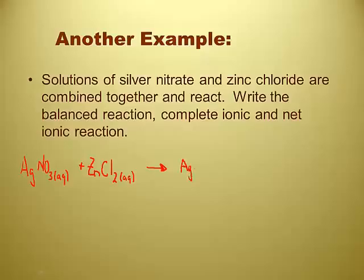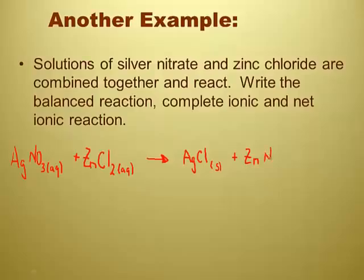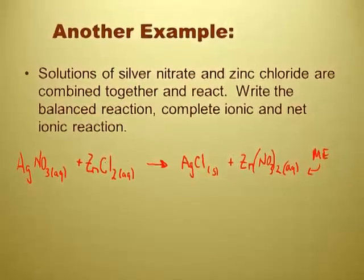This is going to form silver chloride — and that's going to be insoluble, because silver is an exception to the chloride solubility rule. That's the precipitate. We've also got zinc nitrate: anything attached to nitrate is going to be soluble, and there are no exceptions to that rule, so zinc nitrate is aqueous.